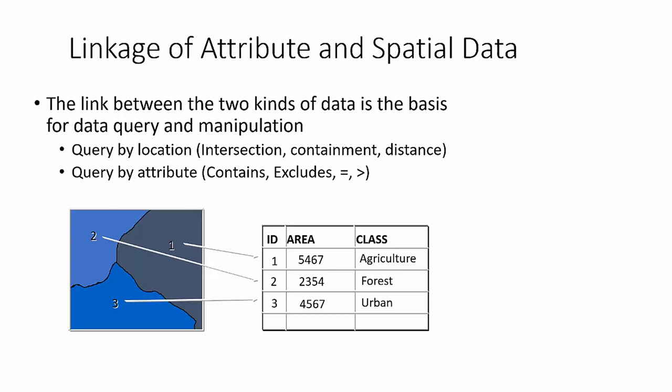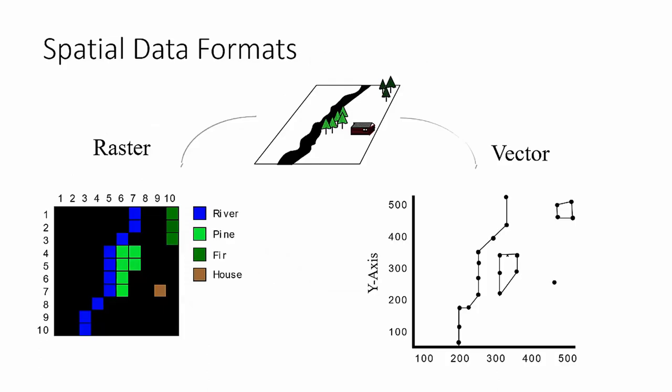There's a linkage between attributes and spatial data, usually through a unique ID or composite ID. This is really the power of geospatial data: when linked together, you can query by location — does what I'm seeking intersect, contain, or is it within a certain distance of a geographic location? Then see the attributes associated with features that meet those criteria and do statistics and analysis. Or you can query by attributes — give me all locations that exceed a certain property value — as a way of discovering specific locations in a map.